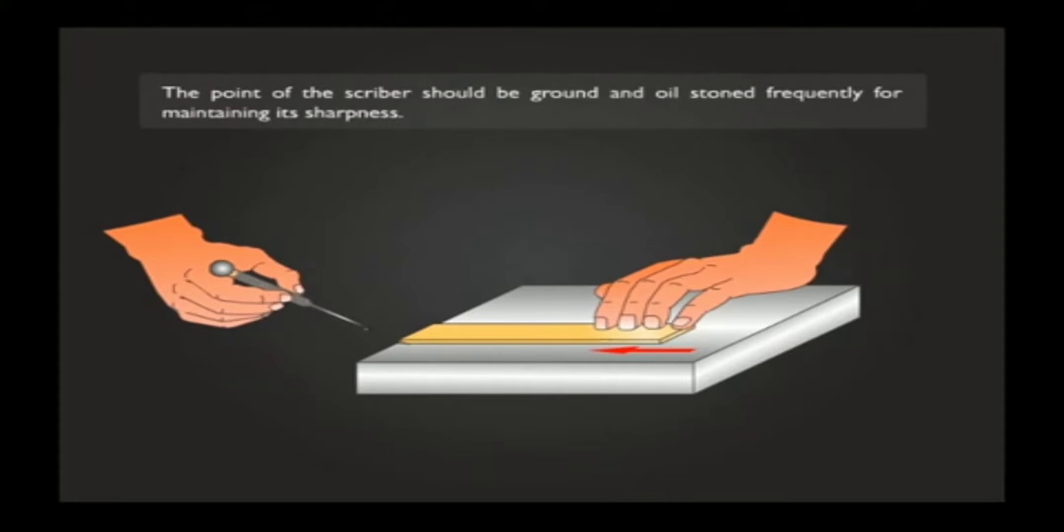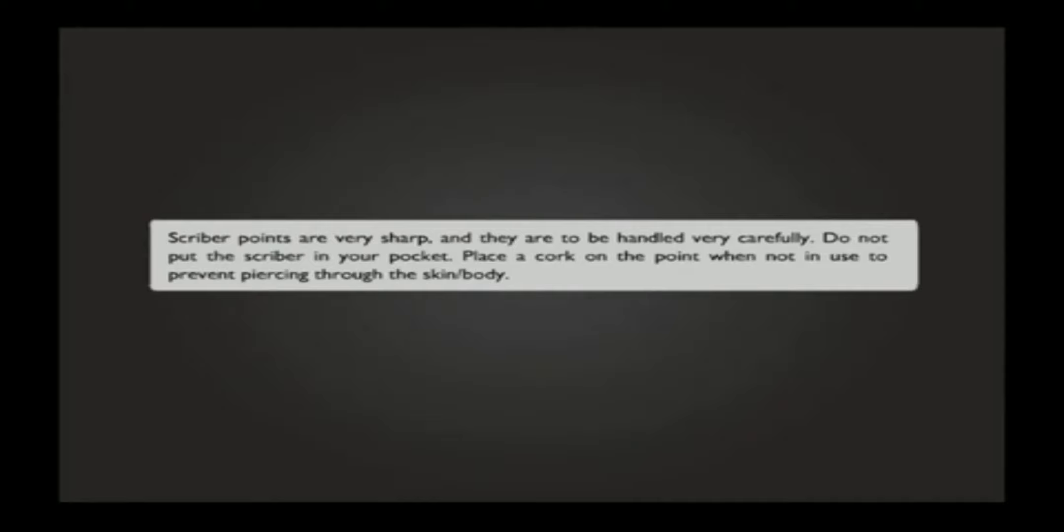The point of the scriber should be ground and oil-stoned frequently for maintaining its sharpness. Scriber points are very sharp and they are to be handled very carefully. Do not put the scriber in your pocket.